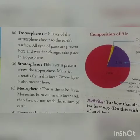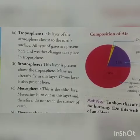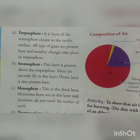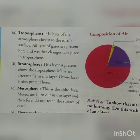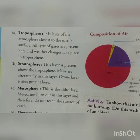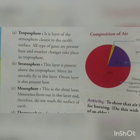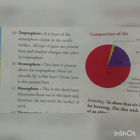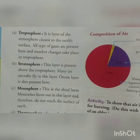The second layer is the stratosphere. This layer is present above the troposphere. Many jet aircraft fly in this layer and the ozone layer is also present here. The ozone layer prevents the harmful ultraviolet radiation of the sun from reaching the earth's surface by absorbing it.